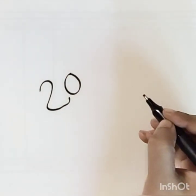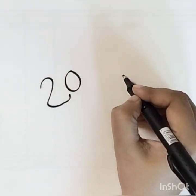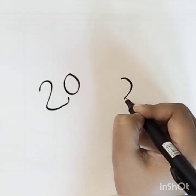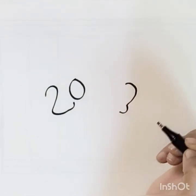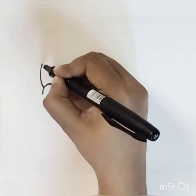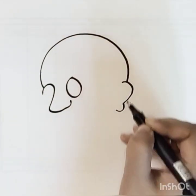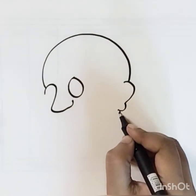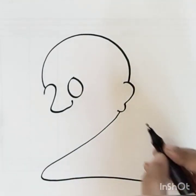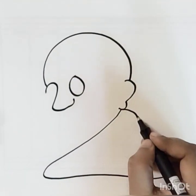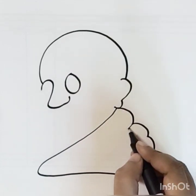Just watch the movement. First we will draw 2 in the same way as I have drawn, and then 0, and then 3. Later on we will draw a very big 2 like this to make his face and his robes. See how big I have made — you will also draw in the same way.